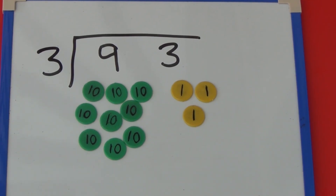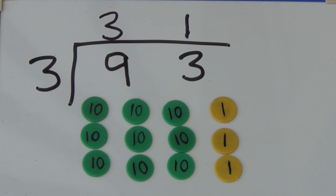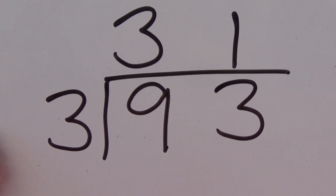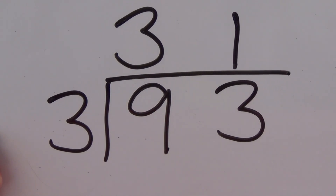For 93 we need 9 tens and 3 ones. As we're dividing by 3, we need to put the tens into groups of 3 and then the ones. The 9 tens divide into 3 groups of 3 tens and the 3 ones divide into 1 group of 3. 3 tens and 1 one is 31. So 93 divided into groups of 3 equals 31. We can show this as a bus stop method without the counters: 93 divided by 3 equals 31.